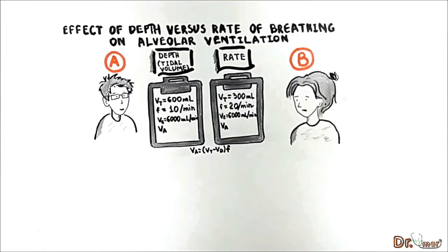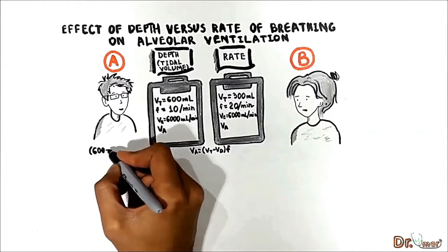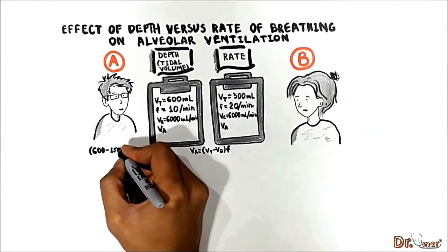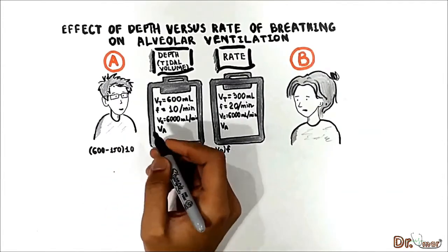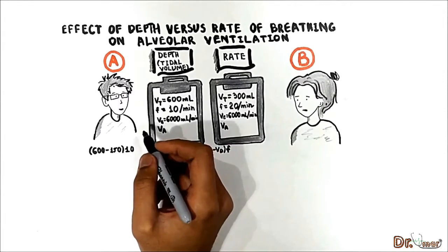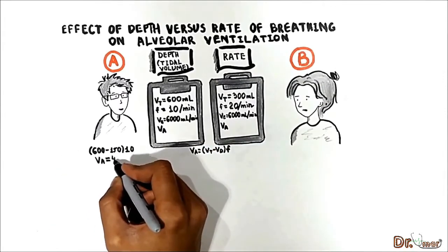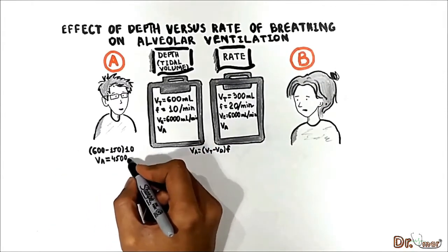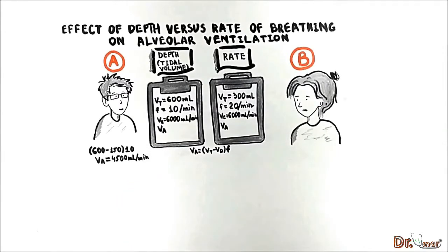Patient A has a tidal volume of 600 mL. So 600 mL minus 150 mL — which is the dead space — times the respiratory rate of 10 per minute gives us 4,500 mL per minute. This is the alveolar ventilation of Patient A.